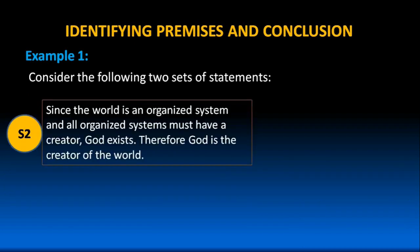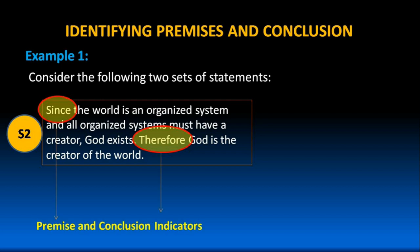Now, let us focus on Set 2. Are there any keywords which can help us to identify premises and the conclusion? Yes, of course, there are certain keywords which can help us. In the given set of statements, the keyword 'since' helps us to identify premises, and the keyword 'therefore' helps us to identify the conclusion. That is why these keywords are called premise and conclusion indicators respectively.